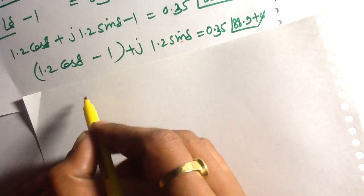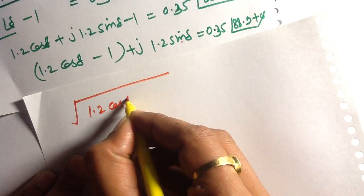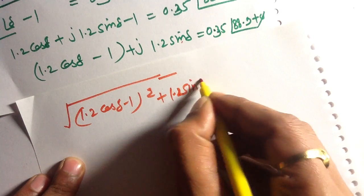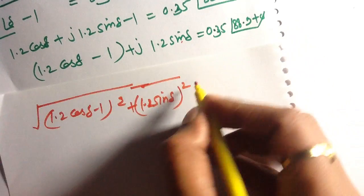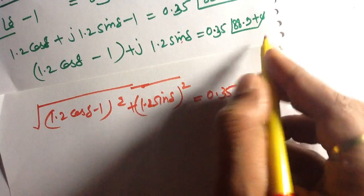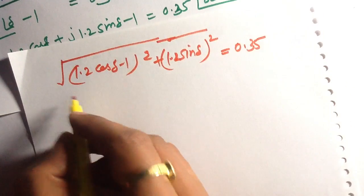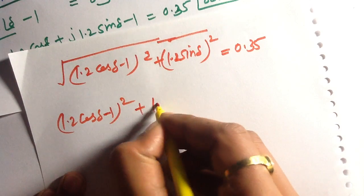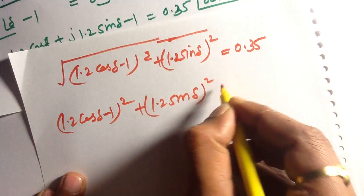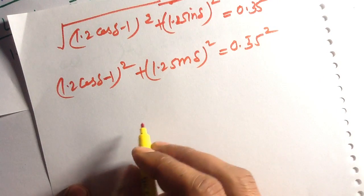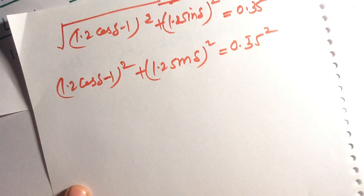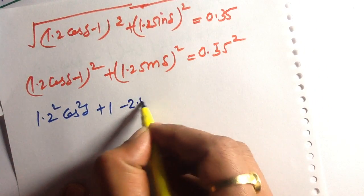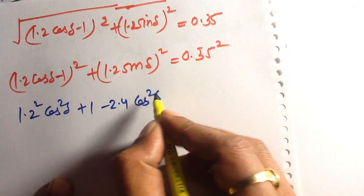Finding the magnitude of the left-hand side: √[(1.2 cos δ − 1)² + (1.2 sin δ)²] = 0.35. Expanding: 1.2² cos² δ − 2.4 cos δ + 1 + 1.2² sin² δ = 0.35². Combining the squared cosine and sine terms gives 1.2² + 1 − 2.4 cos δ = 0.35².